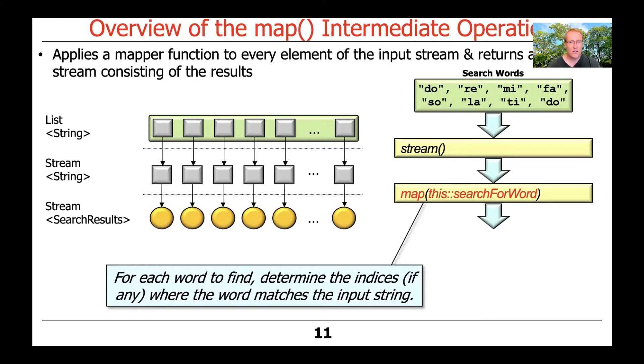As you can see here, searchForWord takes in a string and returns a search results object, and therefore map applied to the searchForWord method reference will take in a stream of strings and return a stream of search results.